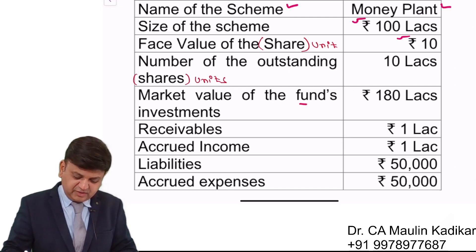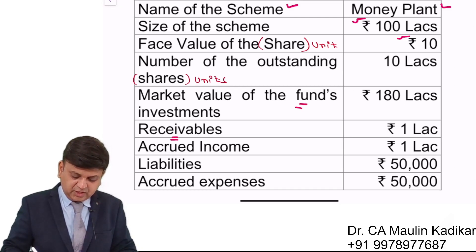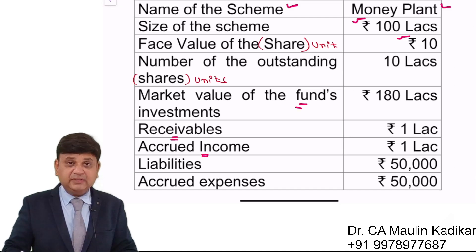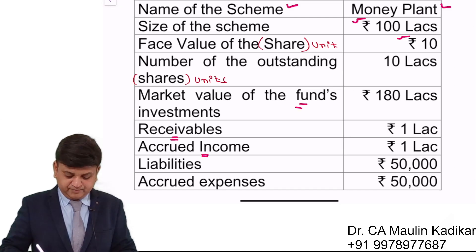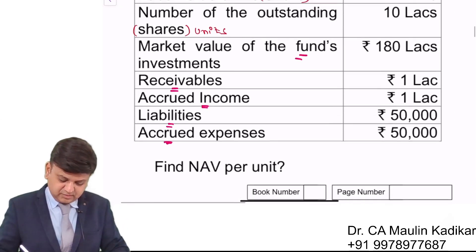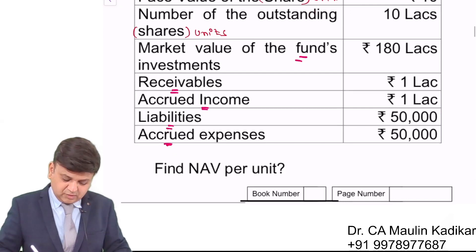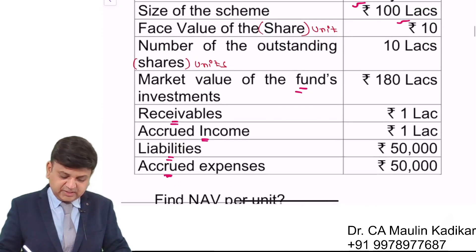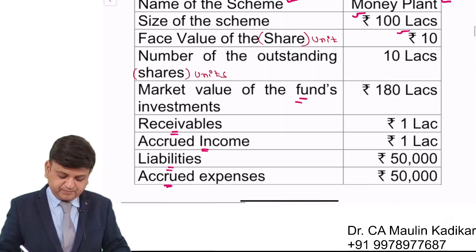The market value of the fund's investments is given, receivables are given, accrued income is given, liabilities and accrued expenses are given. We need to find the NAV per unit — that is the question.